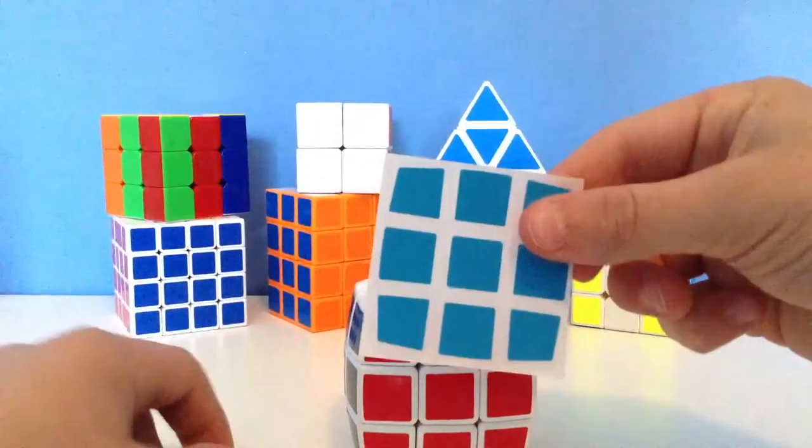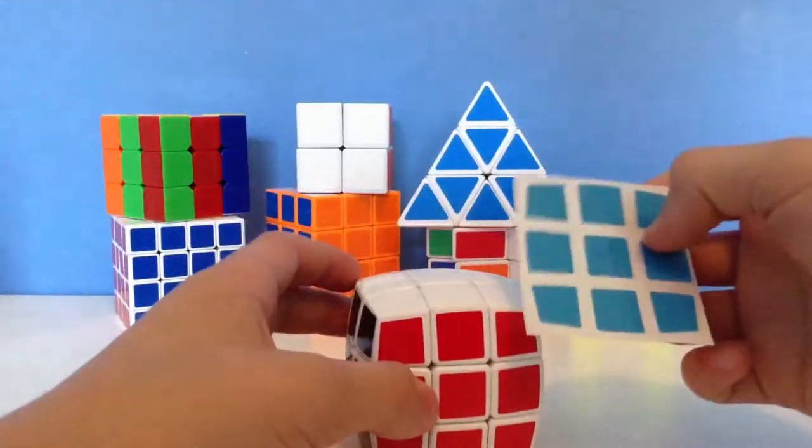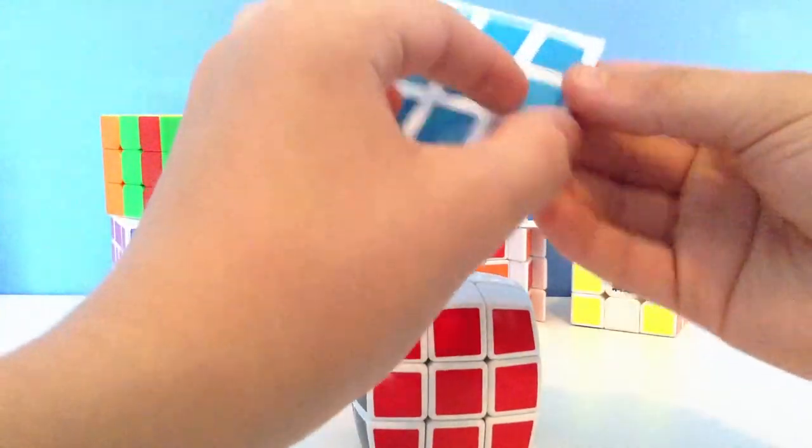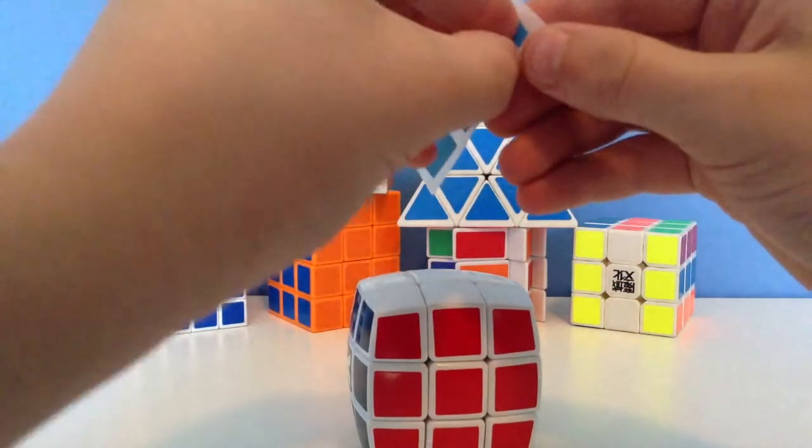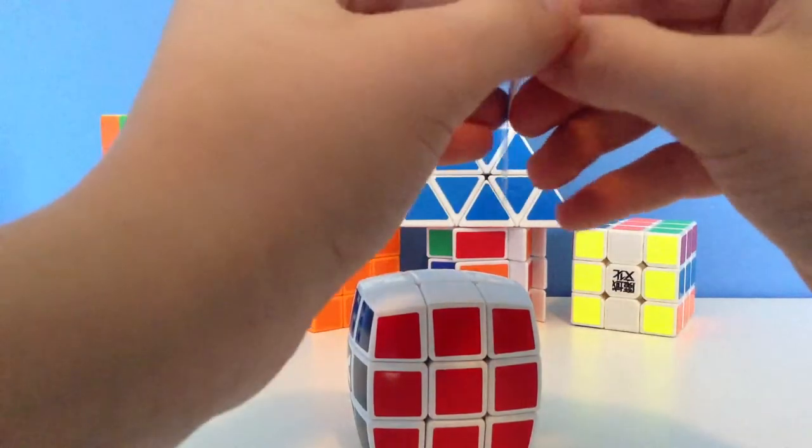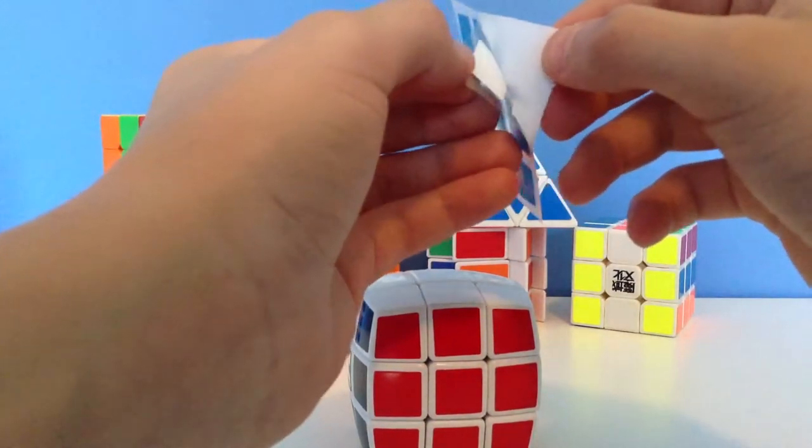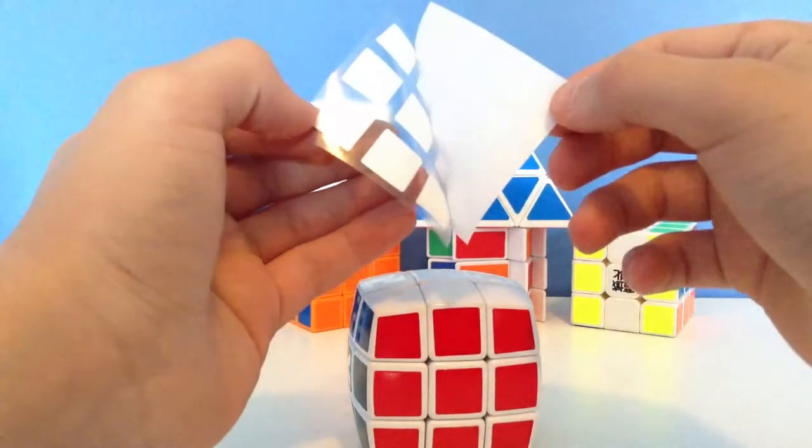Your stickers should be on a transfer sheet, and if not, then you can put them on separately or individually. What you're going to want to do is peel this off slowly on the corner, and then you're going to want to go slowly in a diagonal direction.